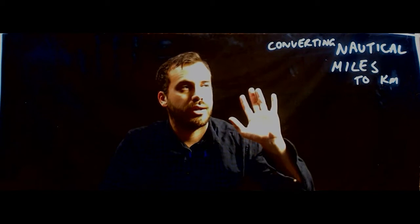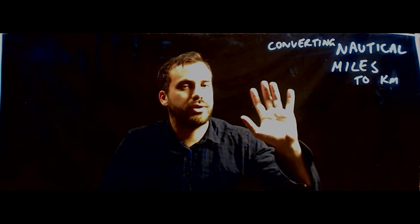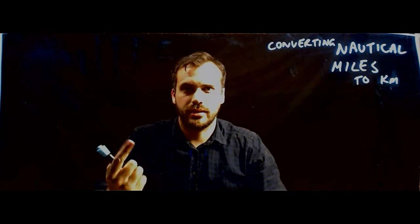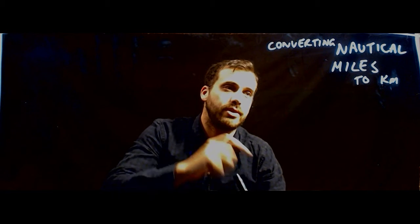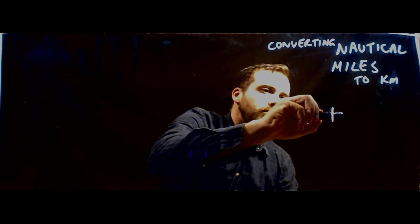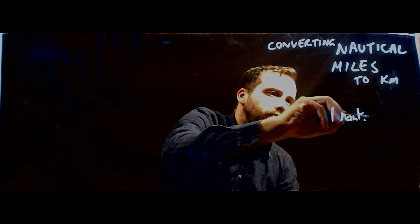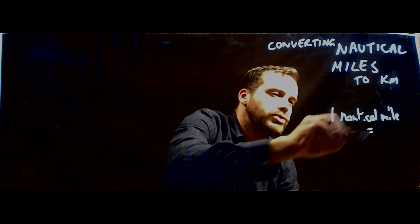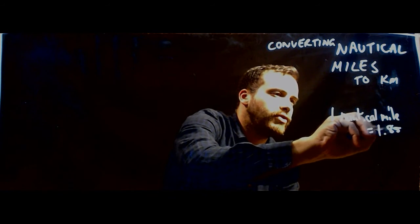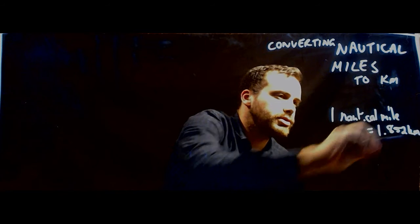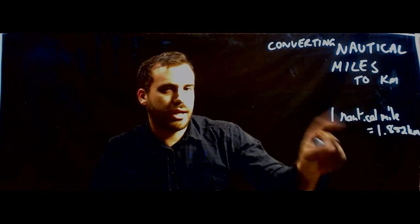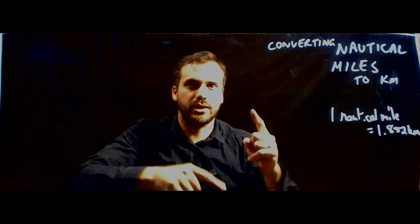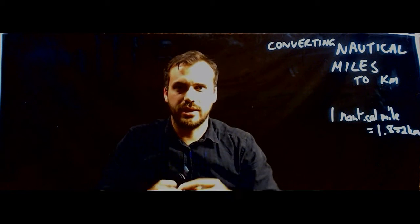I'm going to try to keep this one really short. In this one, we're learning to convert nautical miles to kilometres and then back the other way again. You should remember that one nautical mile is equal to 1.852 kilometres. We're going to use that number 1.852 and one nautical mile to convert from one and back to the other one again.